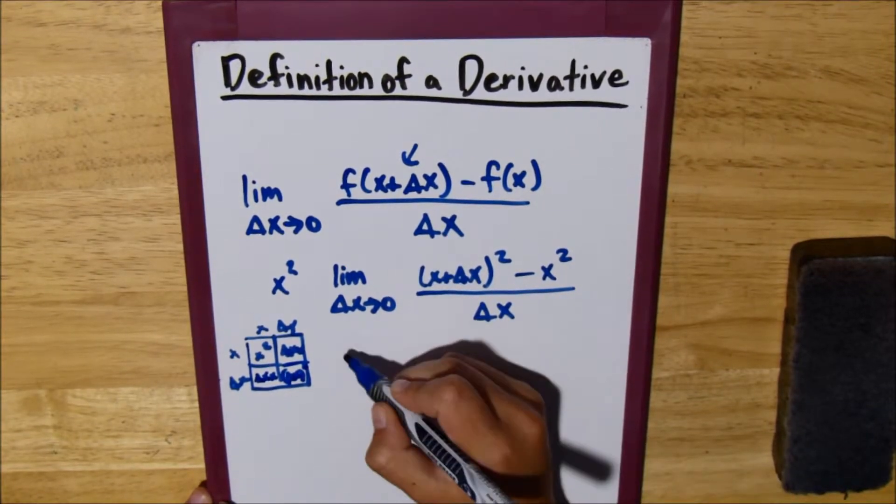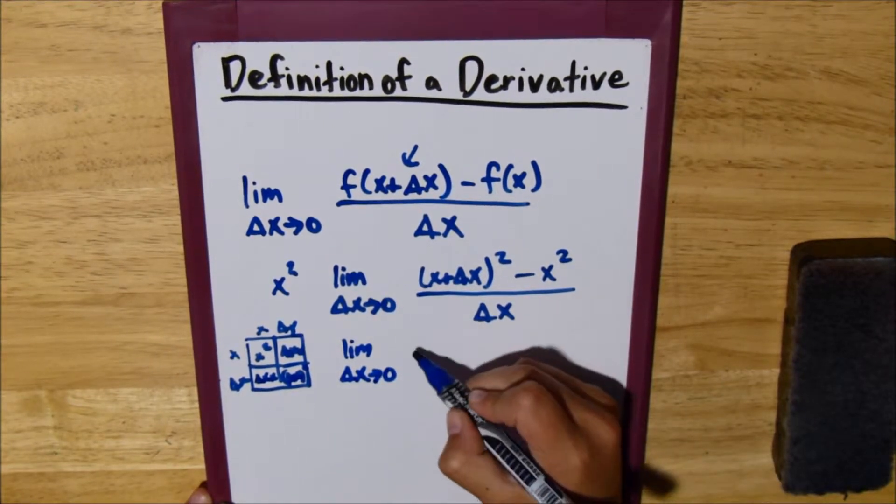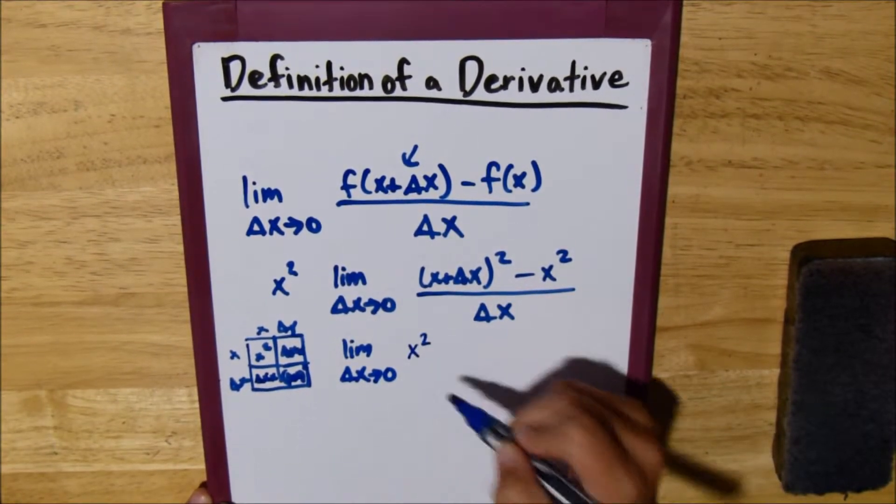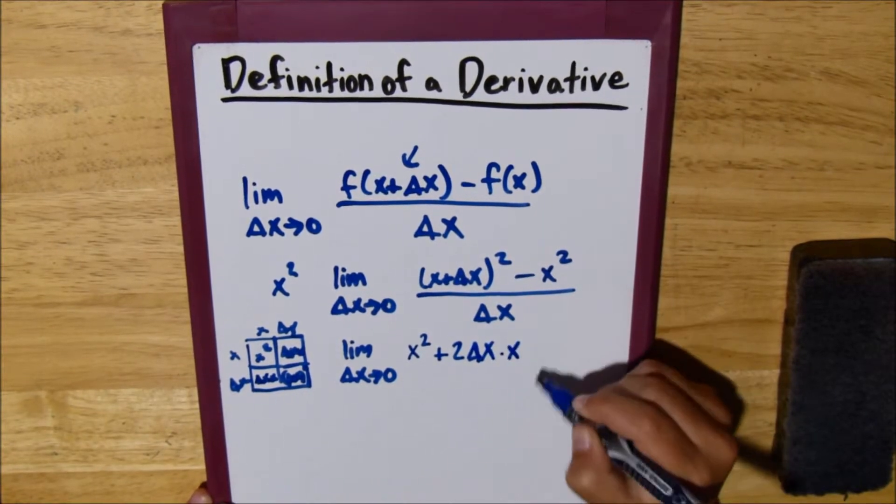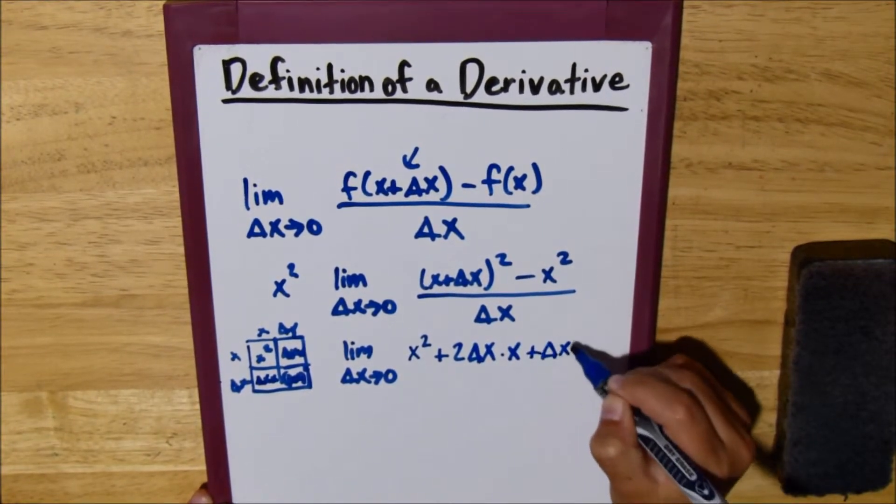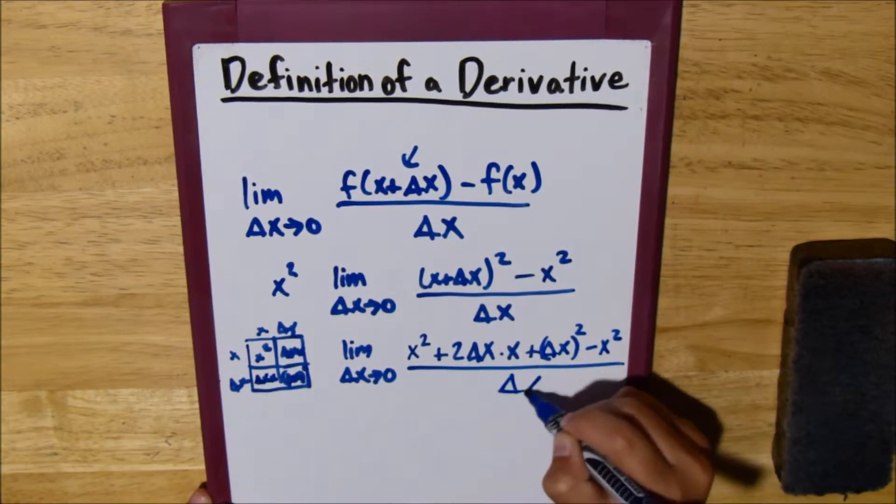Alright, now, we'll rewrite our limit. Limit as delta x approaches 0, we can rewrite this as x squared plus 2 delta x times x plus delta x squared minus x squared, all over delta x.